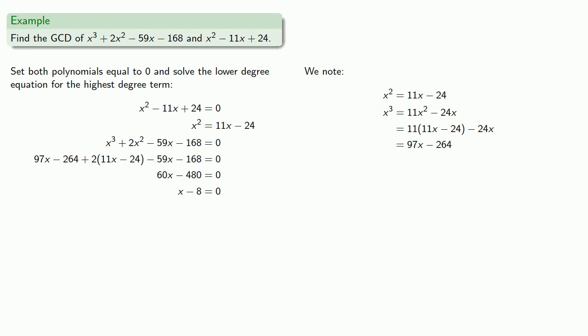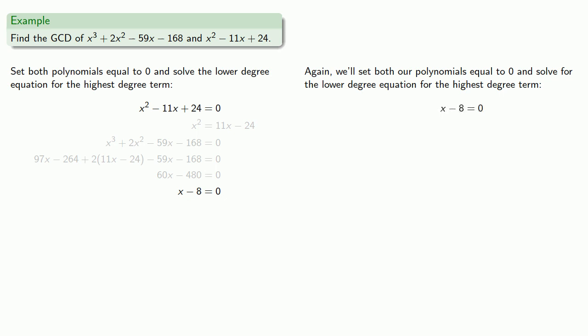It's helpful to think about this new polynomial as replacing our original polynomial. And at this point we're back where we started except now we have two different polynomials. Well now we have two polynomial equations, the quadratic and the linear. So we'll set both polynomials equal to zero and solve the lower degree equation for the highest degree term. And so that's this linear equation x minus 8. We'll solve it getting x equal to 8.